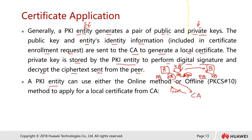A PKI entity can use either an online or offline method to apply for a local certificate from a CA. Some CAs issue the certificate almost instantly online. In the offline method, you generate a certificate enrollment request, attach supporting documents, and email it to the CA. After the CA verifies and approves everything, it signs the local certificate and sends it back to you by email.